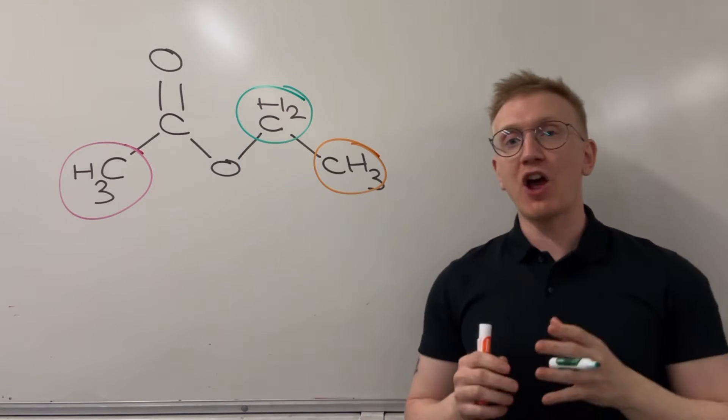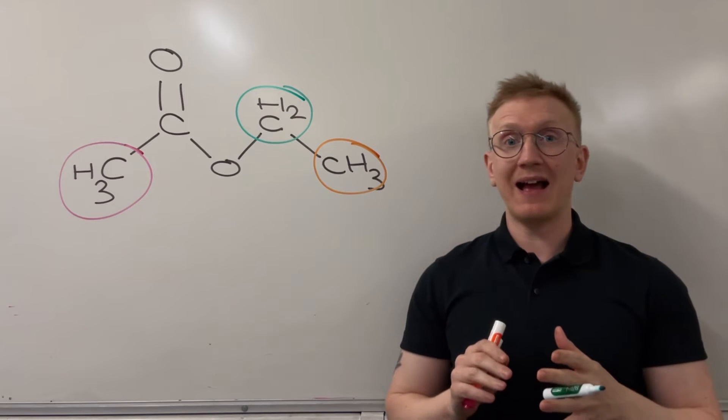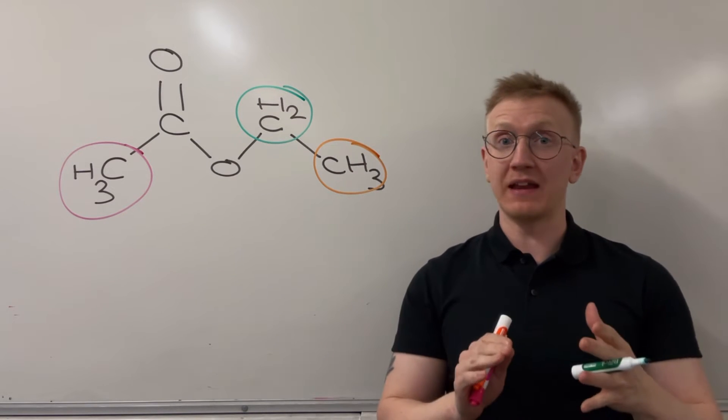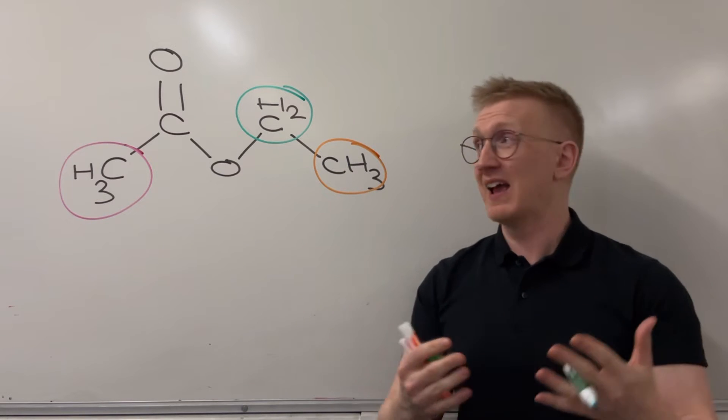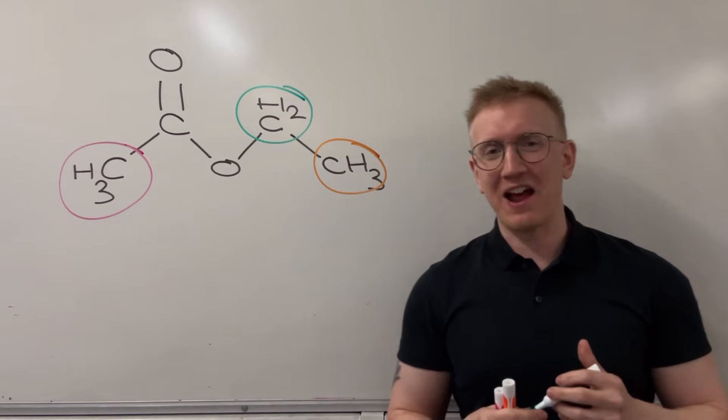If I was to actually look at the carbon-13 NMR spectrum for this molecule of ethyl ethanoate, I would get four peaks there. The hydrogen NMR spectrum only has three, so there's a little bit of a difference there already. And of course we know the hydrogen NMR, which is the whole point of this video, is going to have the splitting pattern.